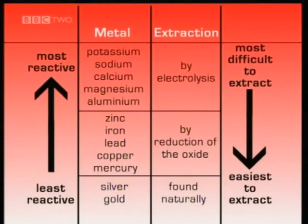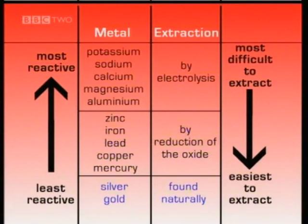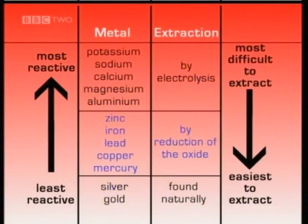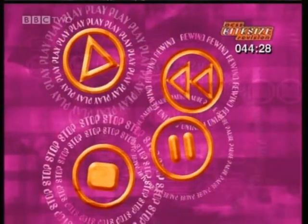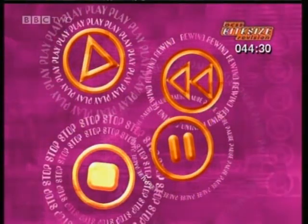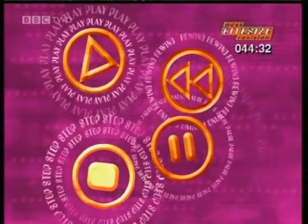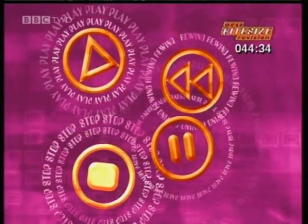Different methods are used to extract metals depending on how reactive they are. The least reactive metals, like gold and silver, occur naturally. More reactive metals can be extracted from their ore by the reduction of their oxides. The most reactive metals need electrolysis to extract them from their ores. That's the end of the section on useful products from metal ores and rocks.